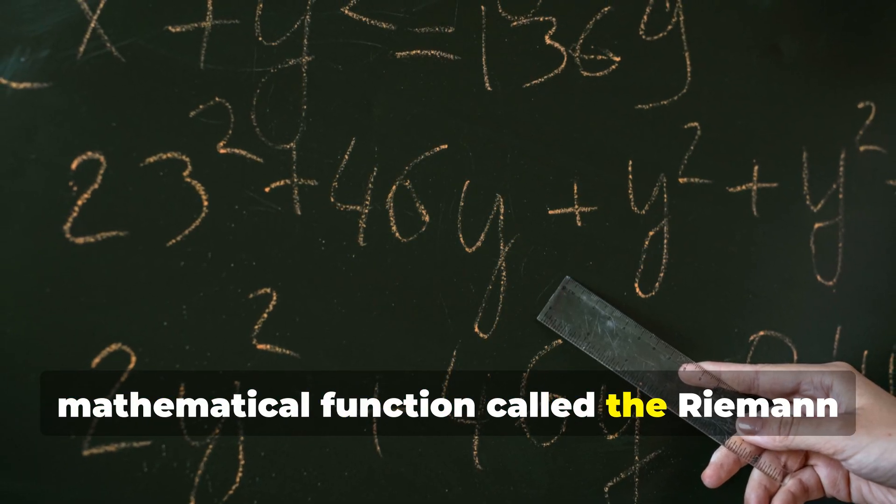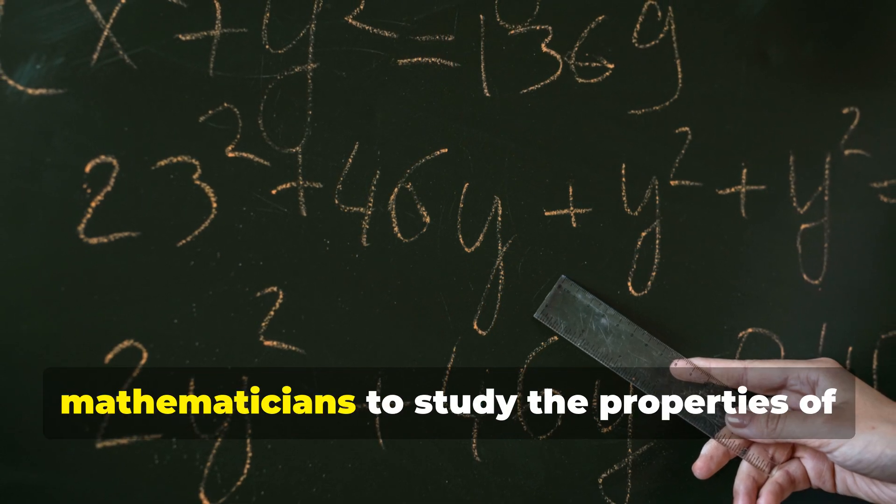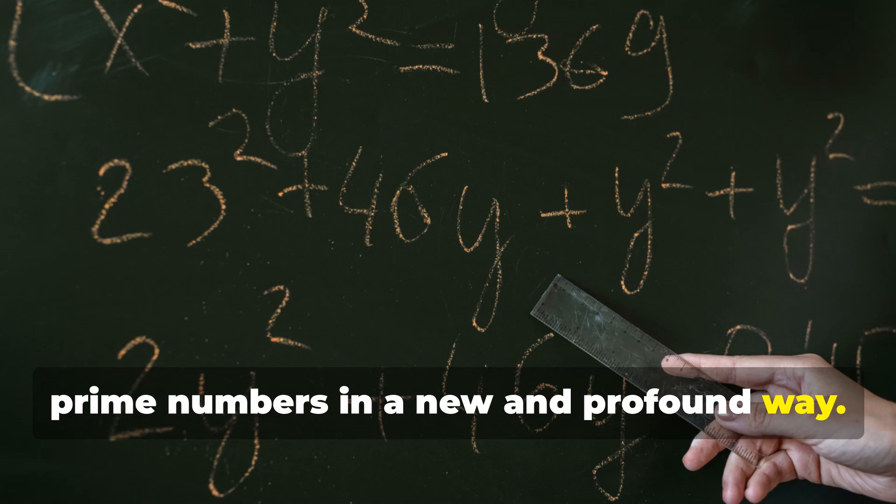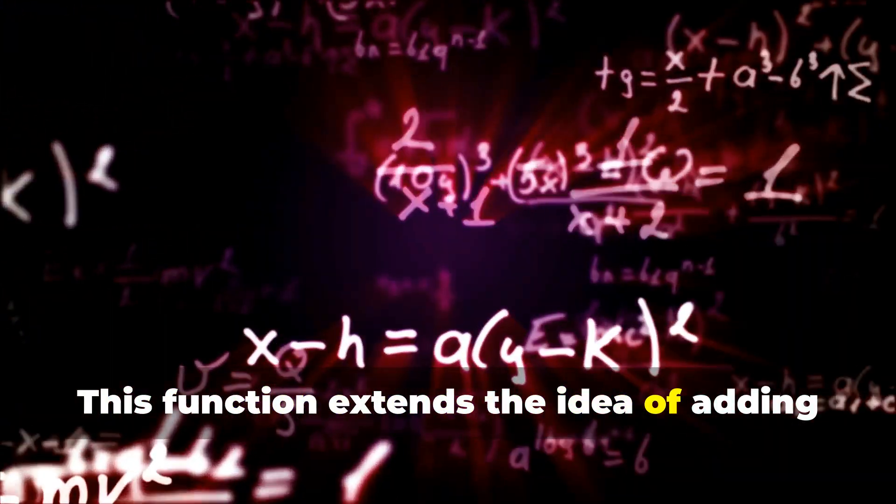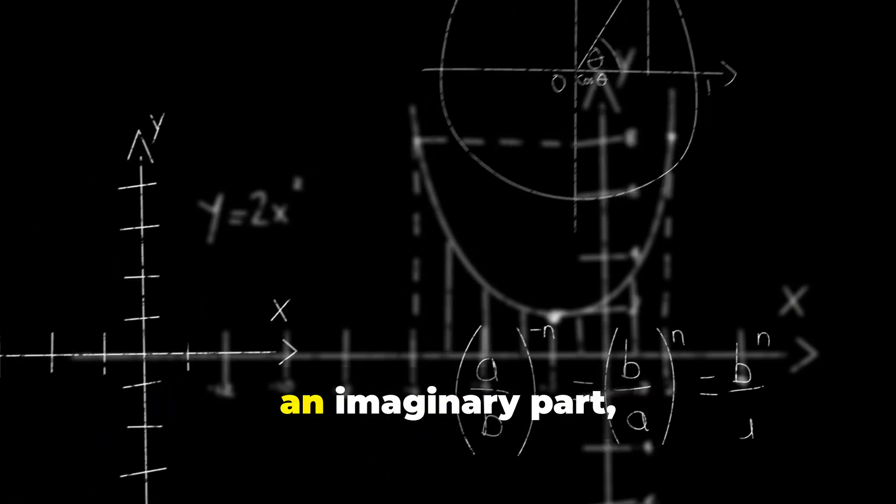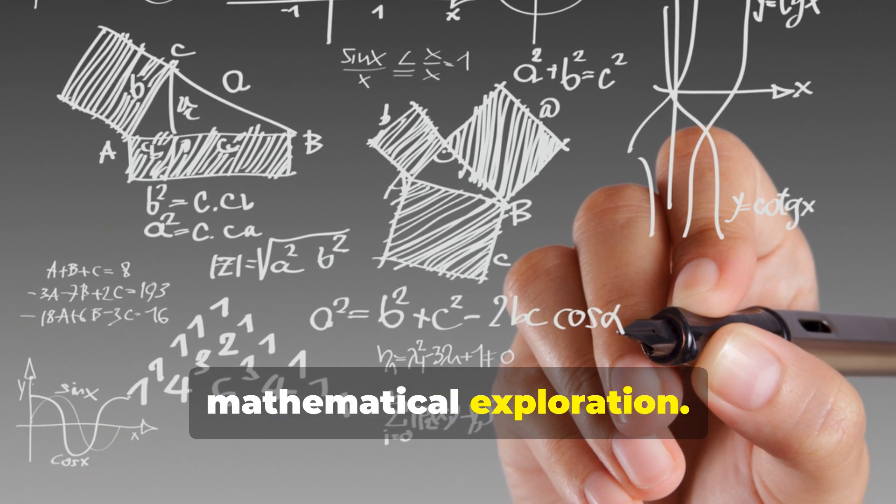He linked this pattern to a complex mathematical function called the Riemann zeta function. This function is a tool that allows mathematicians to study the properties of prime numbers in a new and profound way. This function extends the idea of adding numbers to the realm of complex numbers. Complex numbers include a real part and an imaginary part, and they open up a whole new dimension of mathematical exploration.